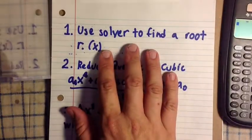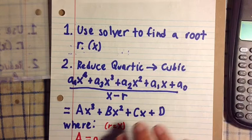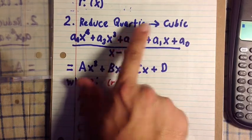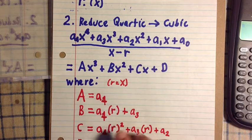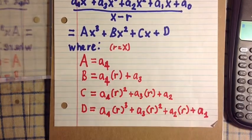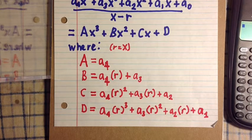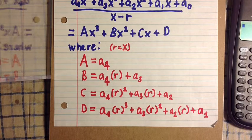Here is our strategy. We're going to use the calculator's general solver to find a root, and we're going to call this root R. And then we're going to reduce the polynomial from a quartic to a cubic by synthetic division. We get this general form, where capital A equals A4, capital B equals A4 times R plus A3, capital C equals A4 times R squared plus A3 times R plus A2.